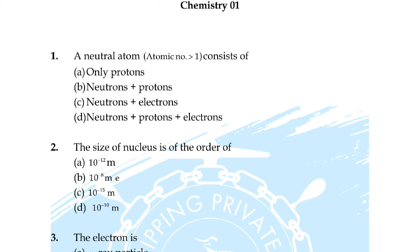Correct answer is option C: 10 to the power minus 15 m. Third question: the electron is — option A: alpha ray particle, option B: beta ray particle, C: hydrogen ion, D: positron. Answer is option B: beta ray particle.